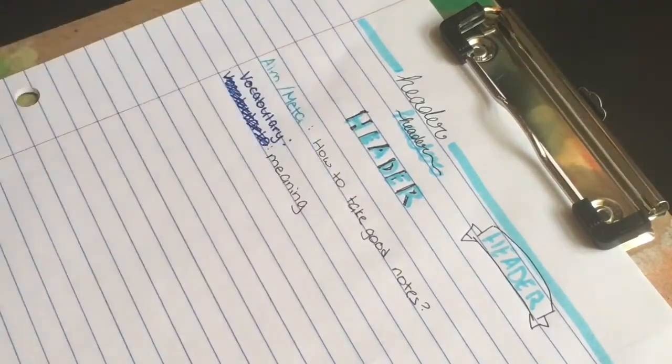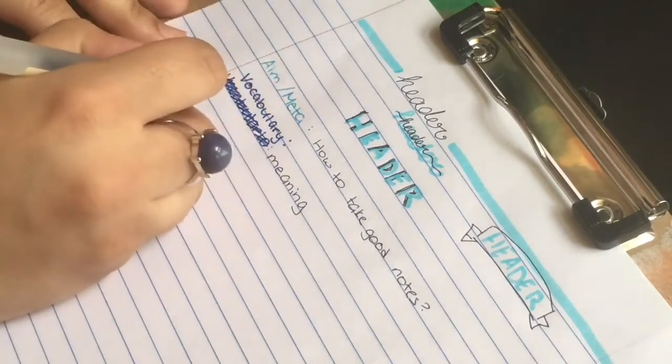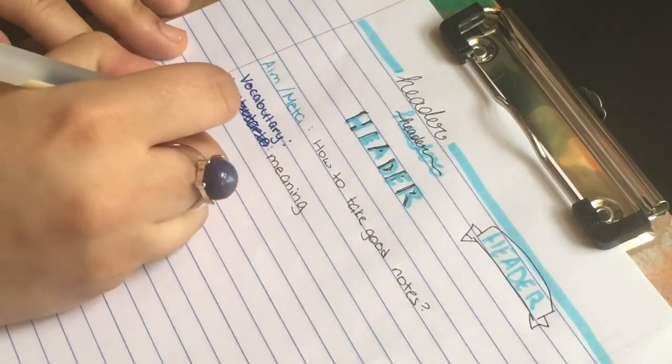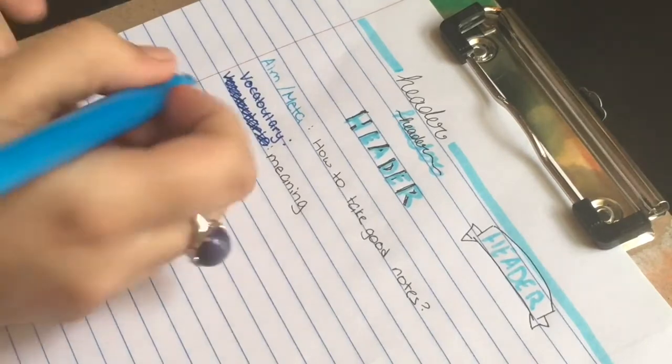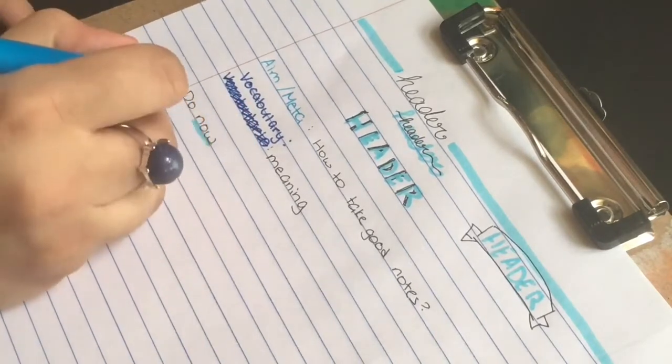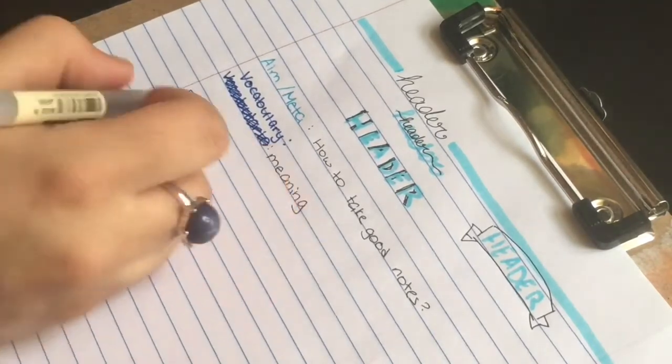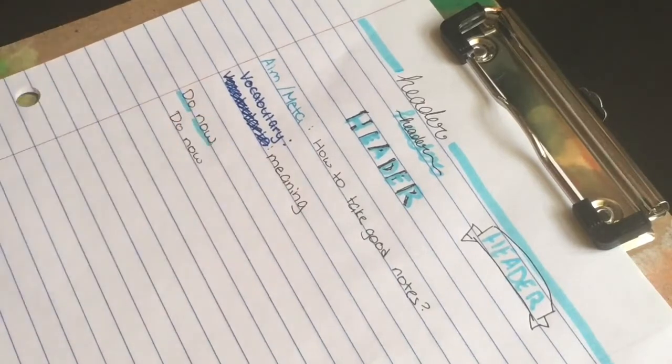We have the header, aim, and vocabulary. This is how I take notes. When doing the do now, I underline with either a highlighter or pen. It depends, because I use pen if there's a lot of highlighter and vice versa.